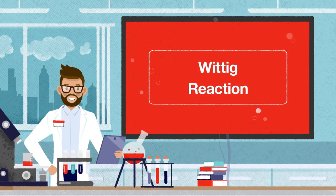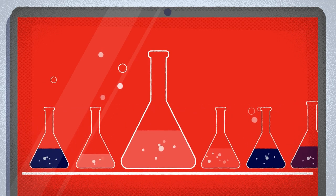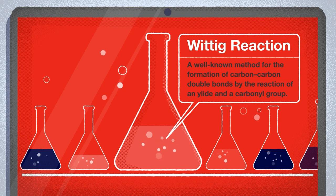First, a few facts. The Wittig reaction is a well-known method for the formation of carbon-carbon double bonds by the reaction of an ylide and a carbonyl group. It has become one of the most widely used synthetic techniques for the formation of alkenes.